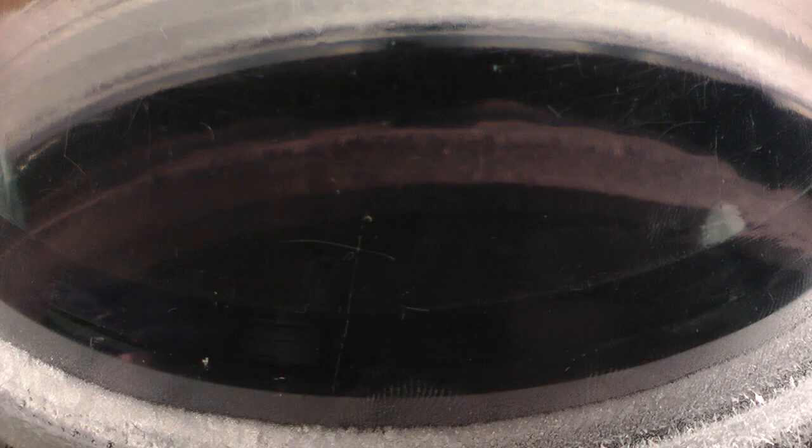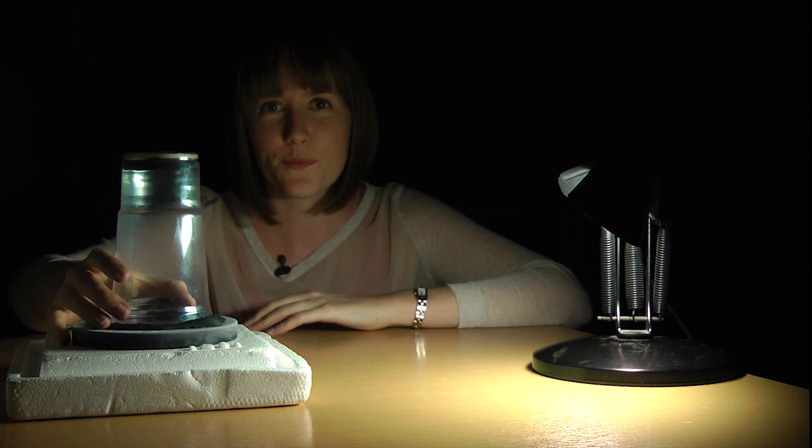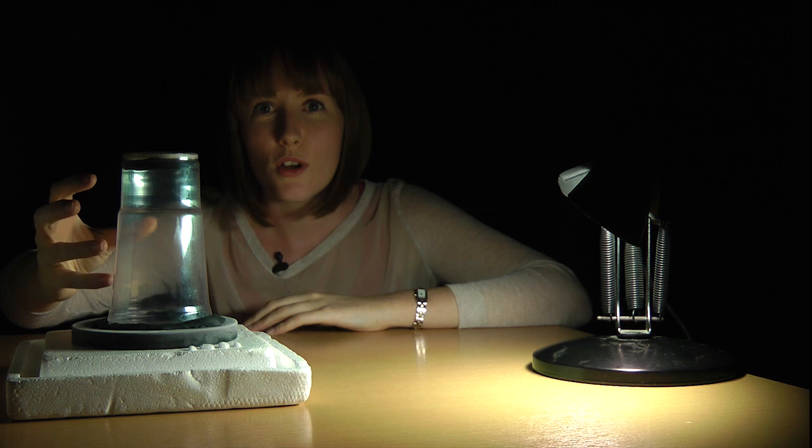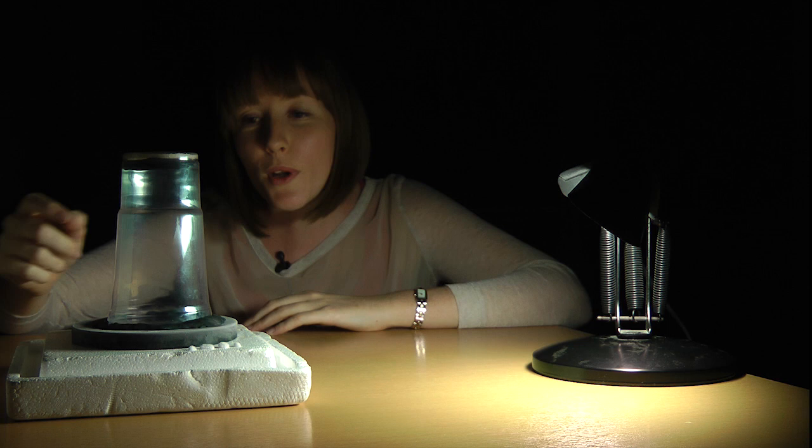The way the cloud chamber works is that it's much warmer at the top here than it is at the bottom. Now the felt has the alcohol in it at the top and because it's warm the alcohol forms a vapour which falls down to the bottom. Now where it's cold the alcohol wants to condense and form droplets but there's nothing for it to condense onto. But when a muon passes through the chamber the alcohol is attracted to the charged particle, the muon, and then it forms little droplets that are the clouds that we see in the cloud chamber.